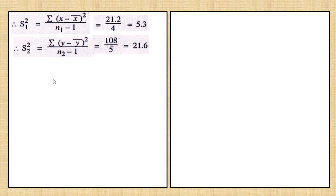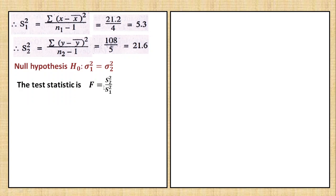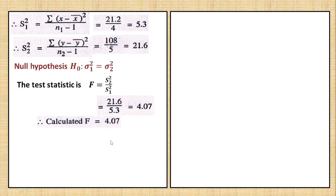Now for the F-test, the null hypothesis is: sigma1² equals sigma2², which means the population variances are equal. The test statistic is F equals S2² divided by S1² — we put the larger variance in the numerator. Applying the values gives a calculated F value of 4.07.